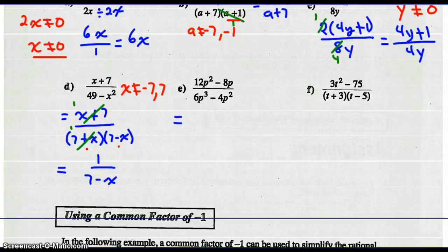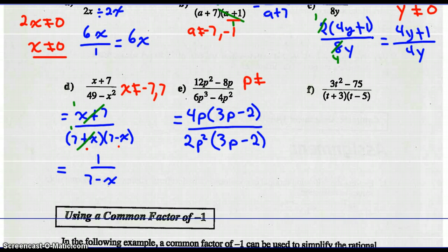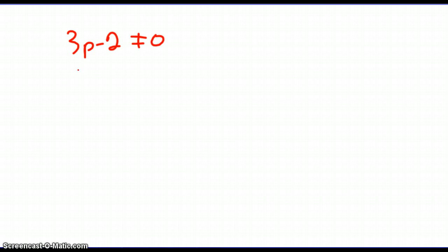For part E, factor the numerator by taking out a common factor of 4p, leaving 3p minus 2. In the denominator, take out a common factor of 2p squared, leaving 3p minus 2. Now state restrictions: p cannot equal 0. Also set (3p−2) equal to 0 — adding 2 to both sides and dividing by 3 gives p can't equal two-thirds.